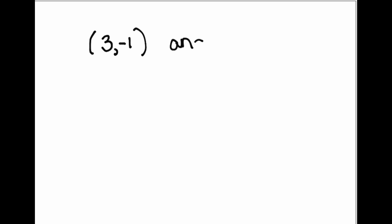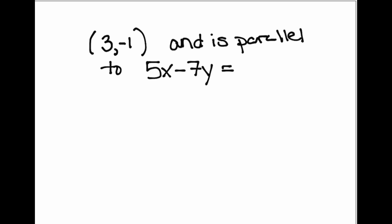Let's see how this works in a problem. We're trying to find the equation of a line that goes through the point (3, -1) and is parallel to 5x minus 7y equals 15. We have the point, so we know the line goes through (3, -1), but we also need a slope because we're going to put that point and slope into our point-slope formula. We have to look at this equation and figure out what the slope is going to be, because once I find the slope of this equation, I use the same slope since we're talking about a parallel line.